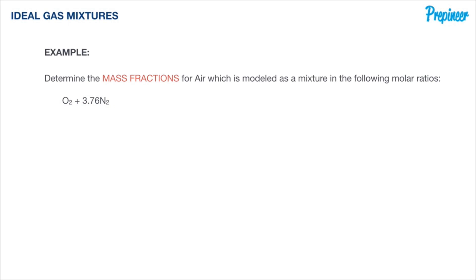Let's actually consider the same mixture, but this time let's determine the mass fractions for air. Now we can continue with the same notation as we did in our previous problem, so oxygen is our first component, nitrogen is going to be our second component. For balance, we know that for every one mole of oxygen, we're going to need 3.76 moles of nitrogen.